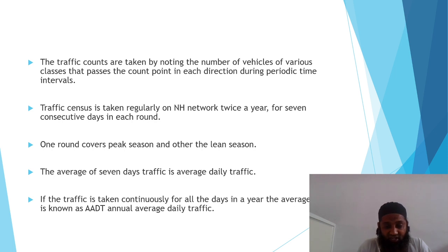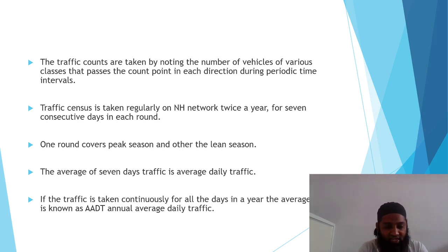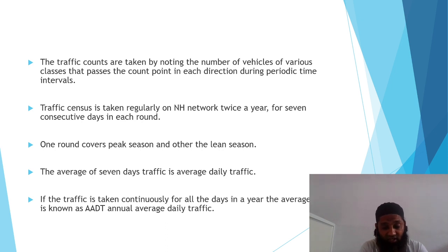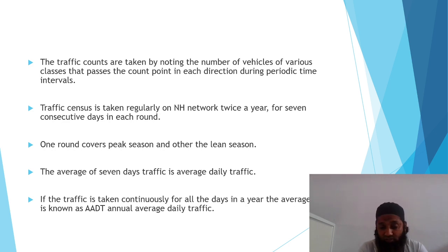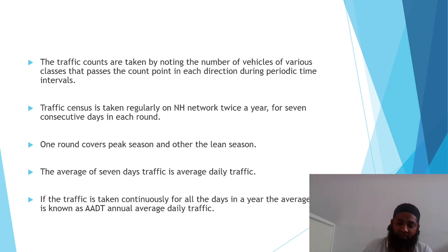The average of seven days' traffic is the Average Daily Traffic (ADT). Once we get the total count of traffic for seven days, the average daily traffic can be known very easily — the total count divided by seven gives us the ADT. If traffic is taken continuously for all days in a year, the average traffic is known as AADT — Annual Average Daily Traffic. This is sometimes done using mechanical devices, since manual counting is not possible for all 365 days, especially during monsoon season. The mechanical device records video, and from that recording the traffic is segregated accordingly.